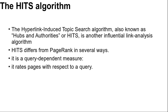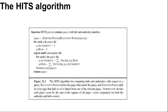Next is the HITS algorithm — Hyperlink-Induced Topic Search, also known as Hubs and Authorities. HITS is another influential link analysis algorithm. HITS differs from PageRank in several ways. First, it is a query-dependent measure — it rates pages with respect to a query, meaning it must be computed anew for each query. This is a computational burden that most search engines have elected not to take on.